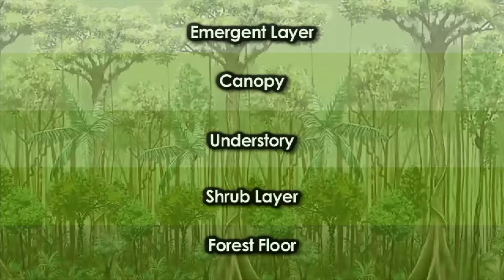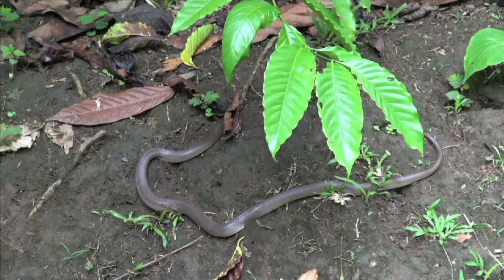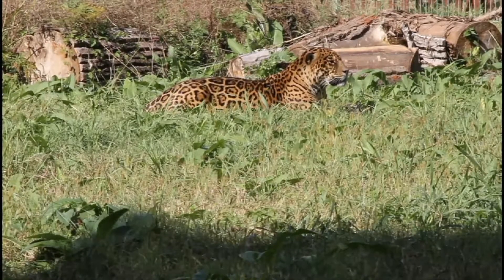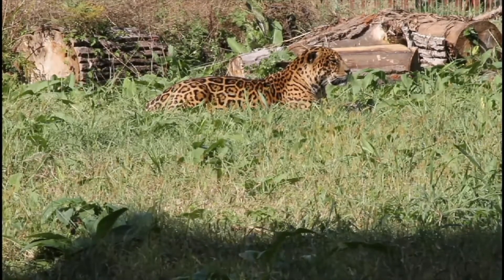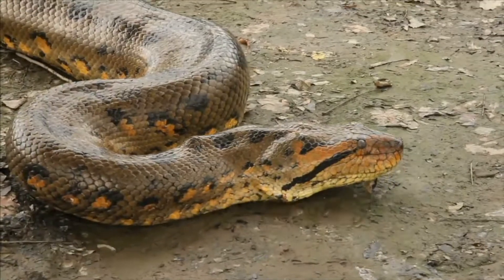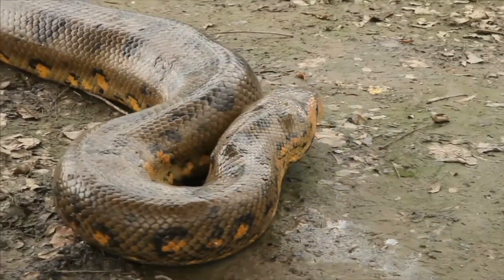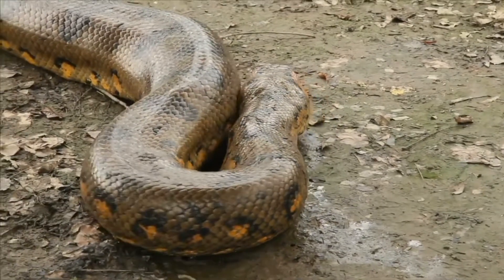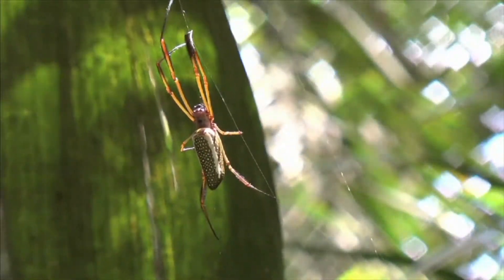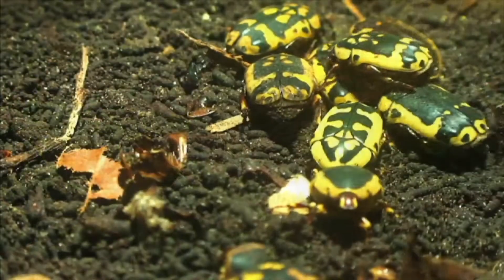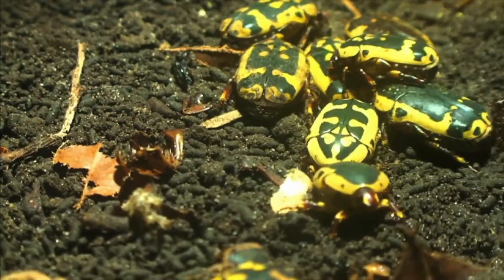Finally, we reach the ground level, called the forest floor. Snakes and jaguars are just a few of the animals that live here. One large, non-poisonous snake that lives on the forest floor is the anaconda of South America. Spiders, ants, and beetles are also very abundant here.